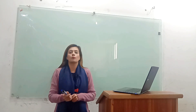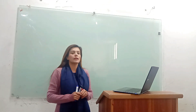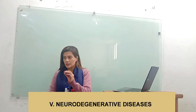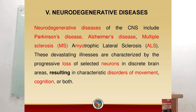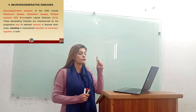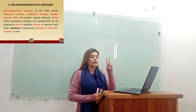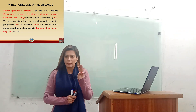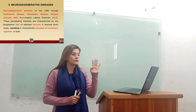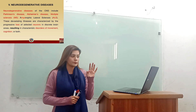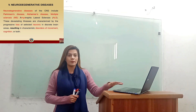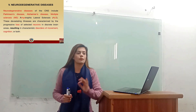We are coming to your book, there is a heading that is Neurodegenerative Diseases. We have discussed the term of Neurodegenerative Diseases, and we have already discussed that neurodegenerative diseases include: first one is Parkinson's Disease, Alzheimer's Disease, then Multiple Sclerosis (MS), then ALS — Amyotrophic Lateral Sclerosis. So these are the terms we have already discussed; we have learned the definition.